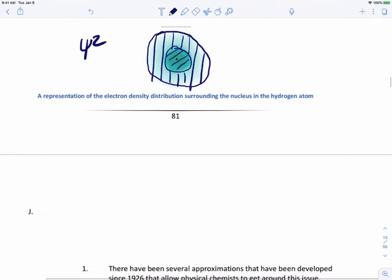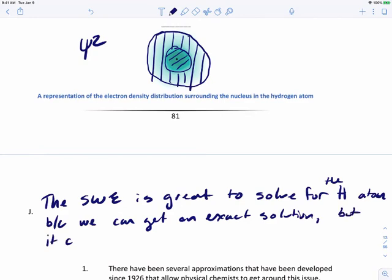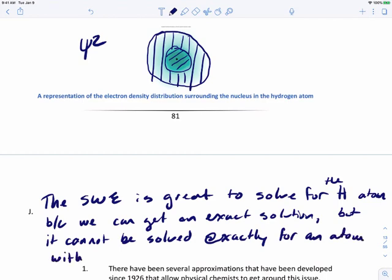The Schrödinger wave equation is great to solve for the hydrogen atom because we can get an exact solution. But it cannot be solved directly for any atom that has more than one electron.